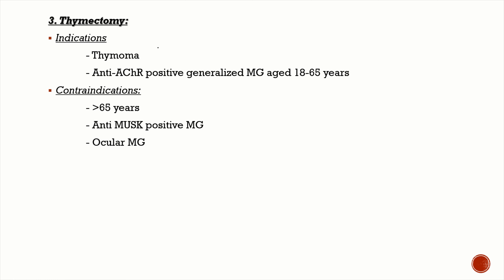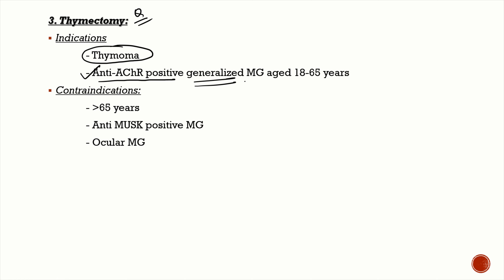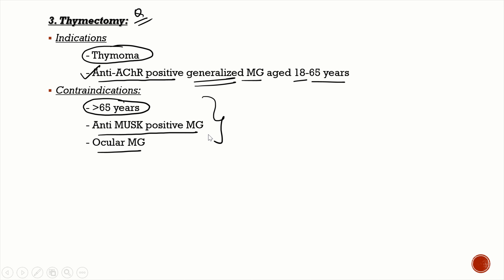Indications for thymectomy in MG: absolute indication is thymoma. Other indications include seropositive (anti-AChR positive) generalized MG in patients aged 18–65. Contraindications are age over 65, anti-MuSK positive MG, and ocular MG.